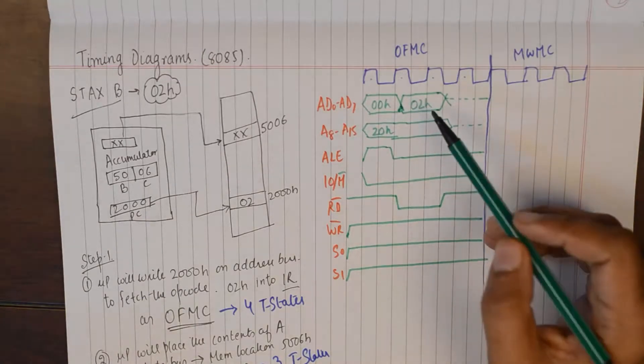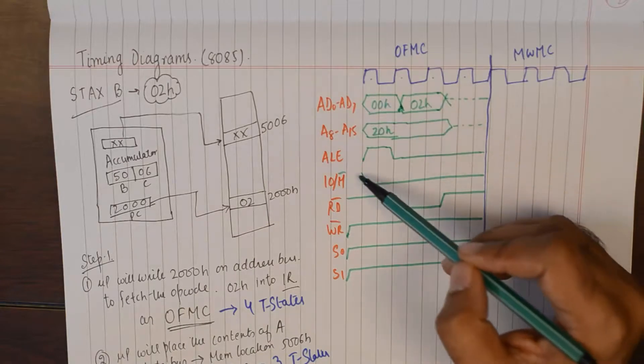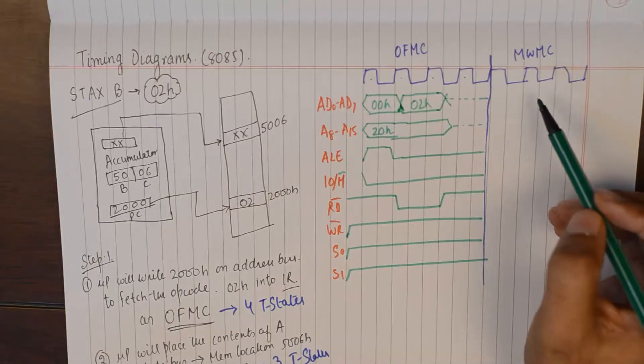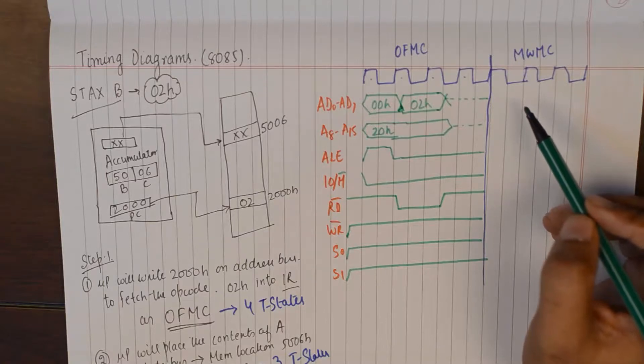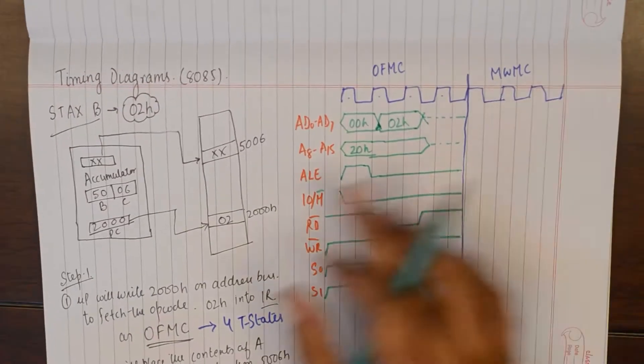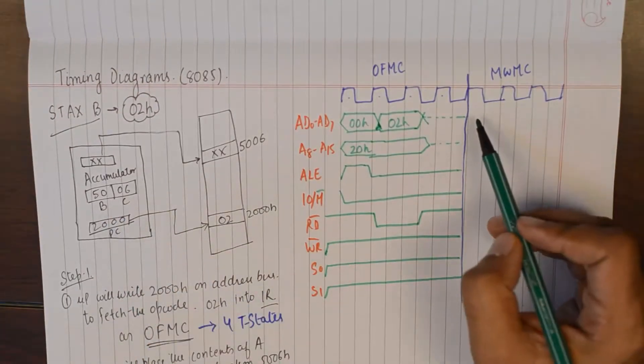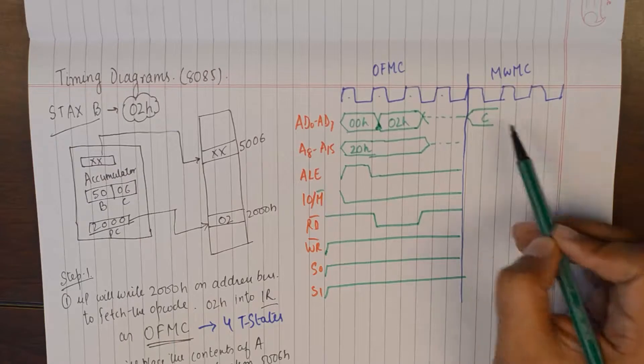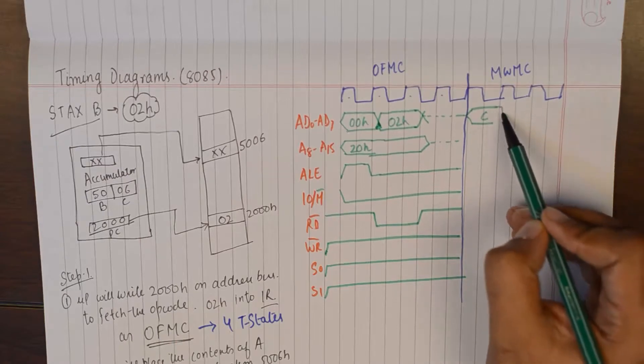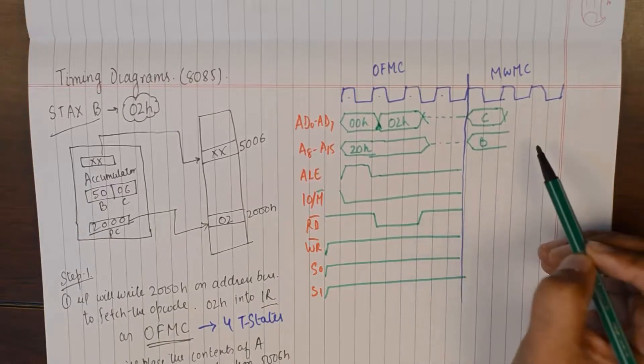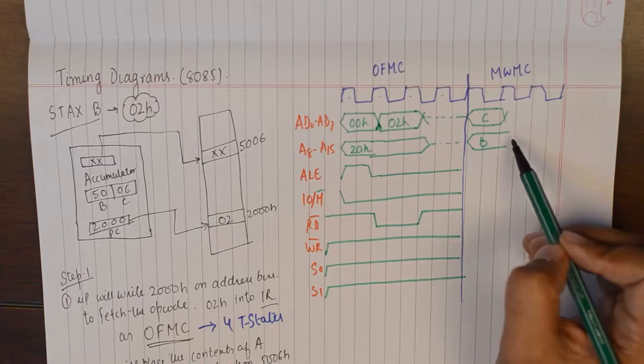So IO slash M will be active low. We are bringing the data from the memory. That is why M slash will be low. And in the next machine cycle where we would want to copy the contents of the accumulator into the memory location which is being pointed by BC register. So we could simply place the contents of C on the lower order address bus and the contents of B on the higher order address bus to make the full address.